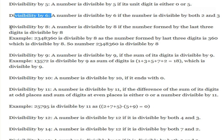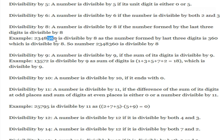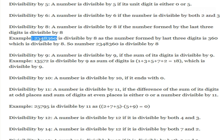Divisibility by 8: a number is divisible by 8 if the number formed by its last 3 digits is divisible by 8. For example, take the number 2348360 — we take the last 3 digits, 360, and check if 360 is divisible by 8. If yes, then the whole number is divisible by 8.